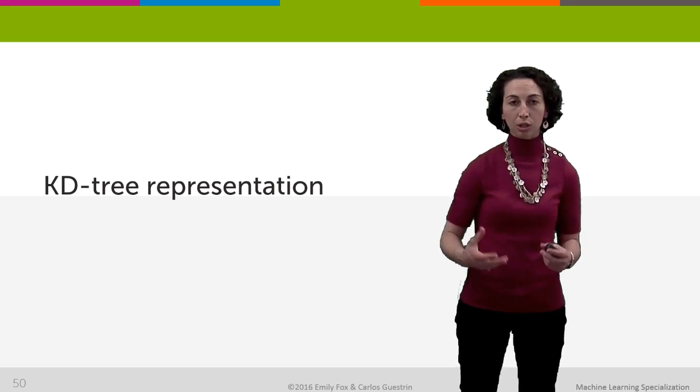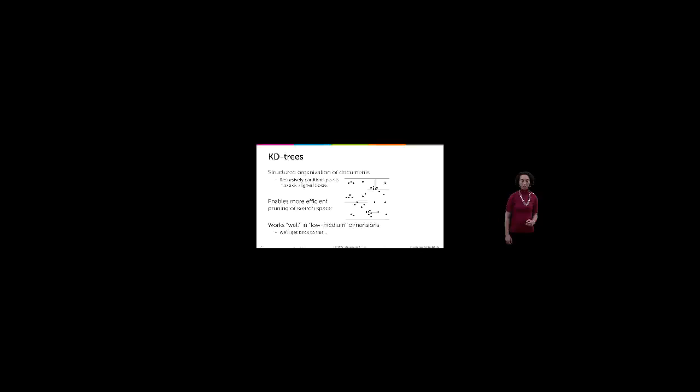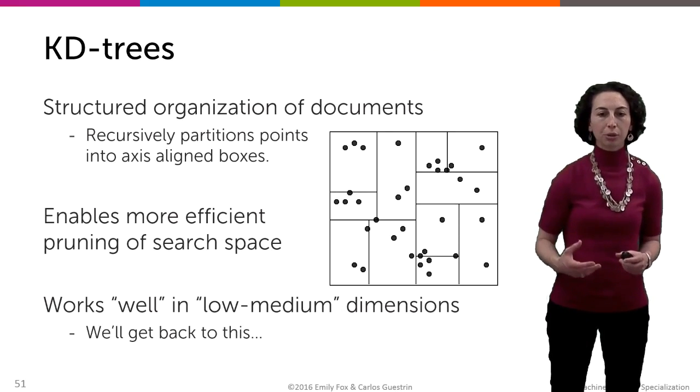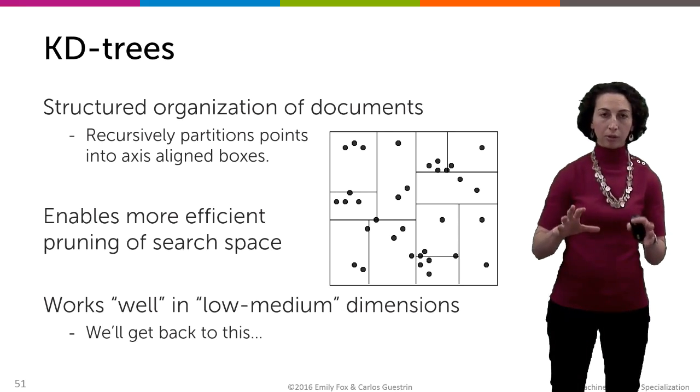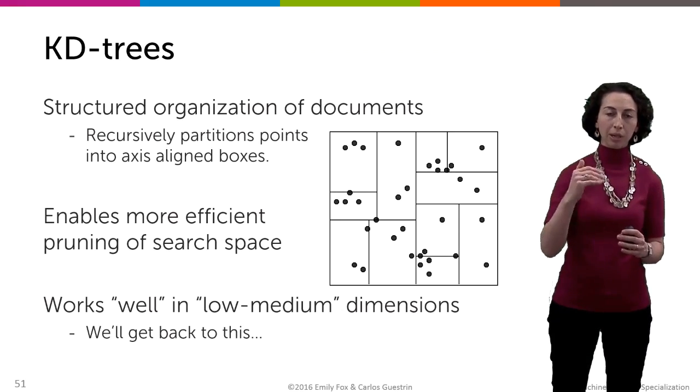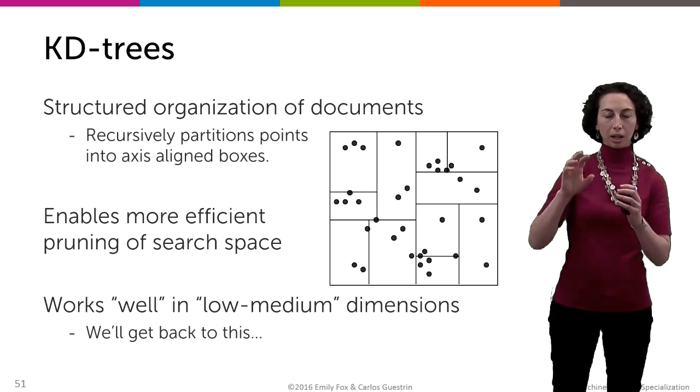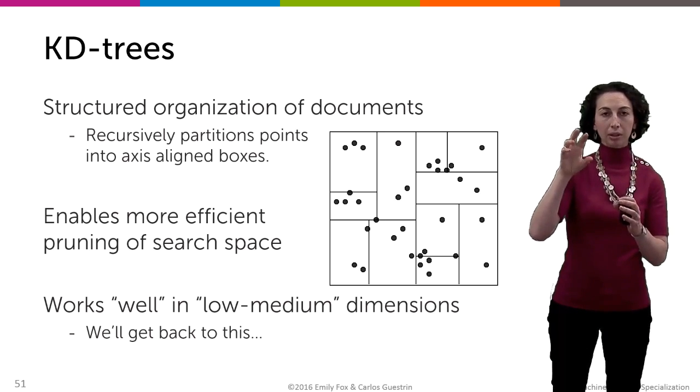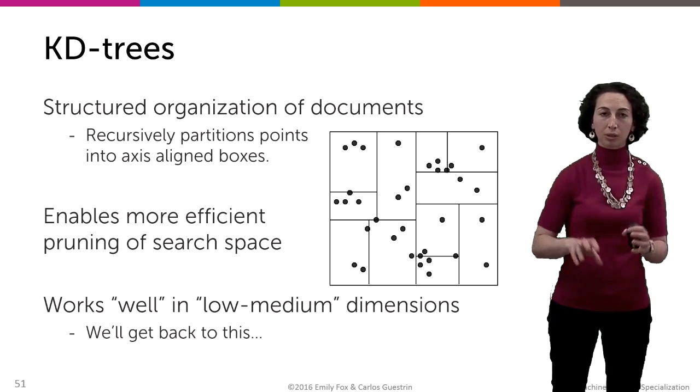And the first thing that we're going to talk about are KD trees. KD trees are a specific data structure for efficiently representing our data. In particular, KD trees provide an organization of our documents in terms of this partitioning of our space. We're going to be making these axis-aligned cuts and maintaining lists of points that fall into each one of these different bins.